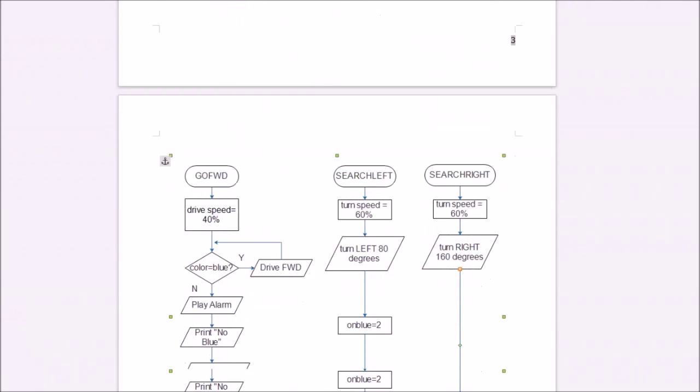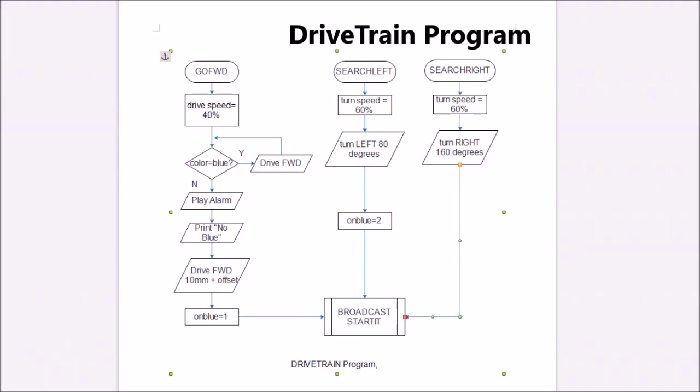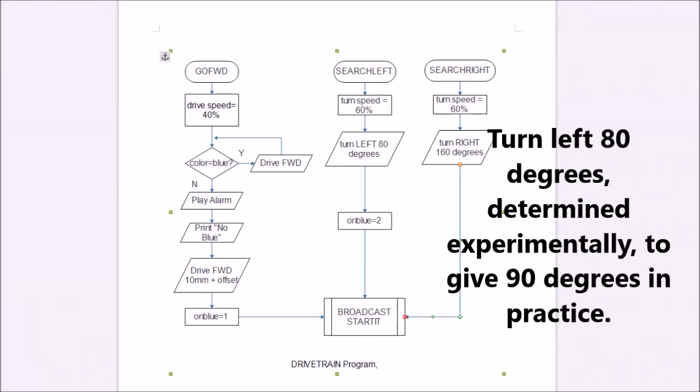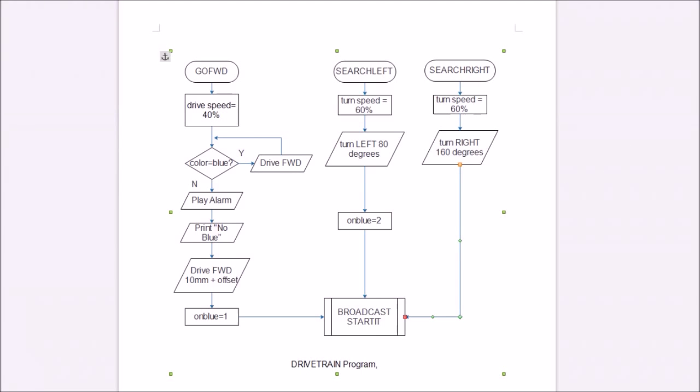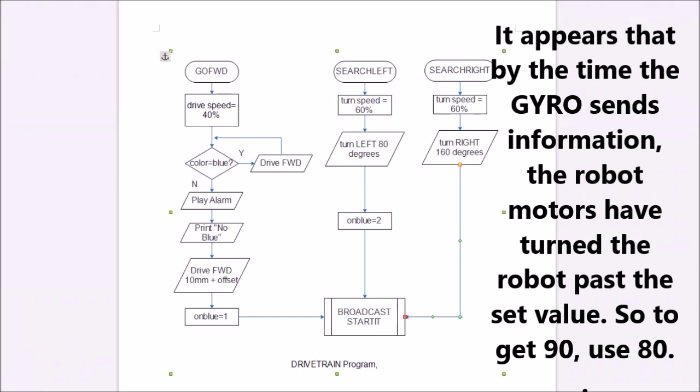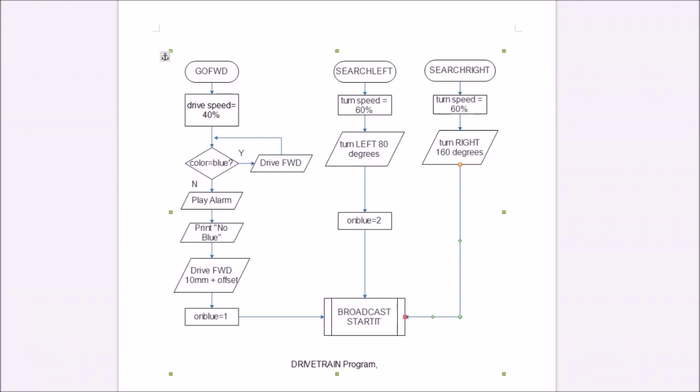So right away, it leaves the brain program, goes to the drive train program. And here in the middle is search left. When the message search left is retrieved, then you turn to the left by 80 degrees after setting the turn speed of 60%. The reason you turned left 80 degrees is that when you turn, the robot might keep turning even though the gyro is telling it that it's 90 degrees. If you say 90 degrees, it's going to turn a little bit more than 90 degrees. So I found out with VEXi, if I turn 80 degrees, if I put 80 degrees for the gyro, VEXi will actually turn 90 degrees.